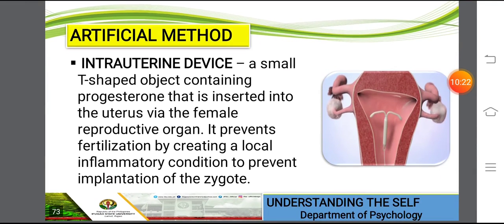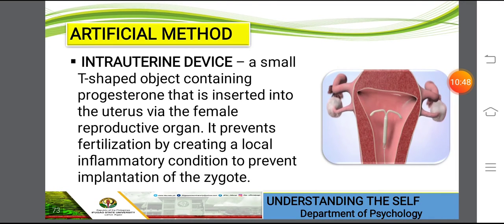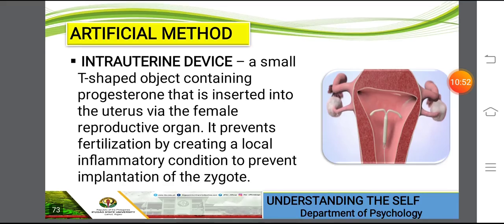Another method is the intrauterine device — a small T-shaped object containing progesterone that is inserted into the uterus via the female reproductive organ. It prevents fertilization by creating a local inflammatory condition to prevent implantation of the zygote. You could see in the illustration how it appears — it is a foreign object inside the female reproductive organ.